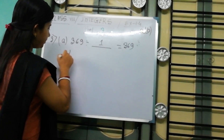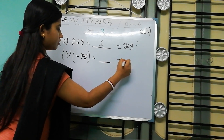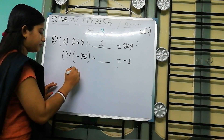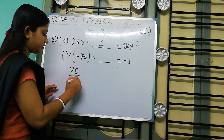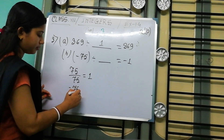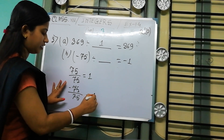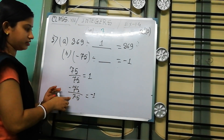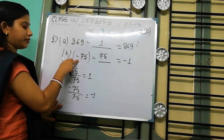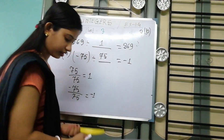Now next, Part B: minus 75 divided by blank equals minus 1. Now if we divide minus 75 by 75, that means 75 by 75 equals 1, and there is a minus sign, so this is minus 1. So if we divide minus 75 by 75, then we get minus 1. So the answer is 75.